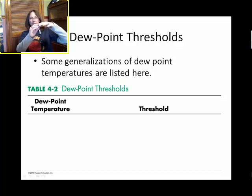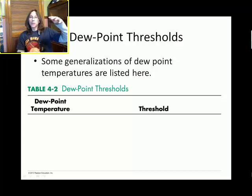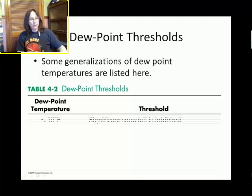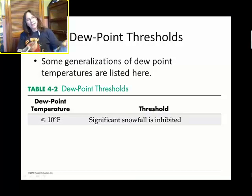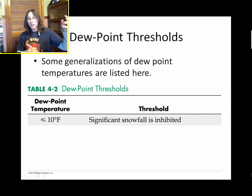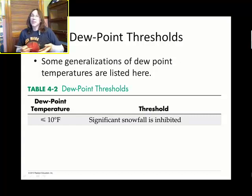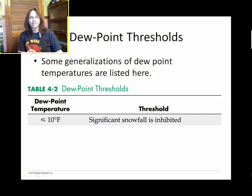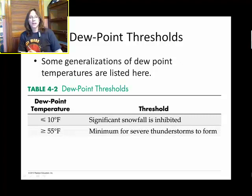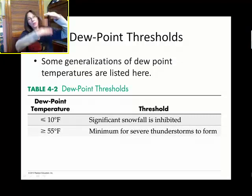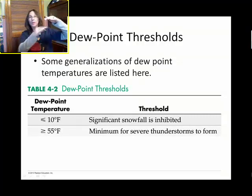The cooler the dew point temperature, the less water vapor there is in the air. For instance, if your dew point temperature is less than 10 degrees Fahrenheit, that means your air is pretty dry. Even if we do cool down to 10 degrees Fahrenheit, the amount of precipitation won't be very much because that air is not holding much water vapor — that's why snowfall is relatively inhibited. Dew point temperatures are always less than the current temperature.